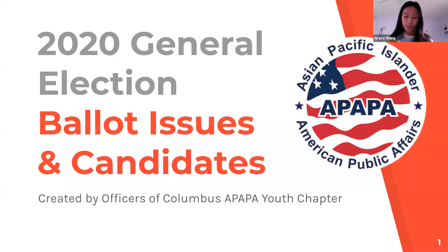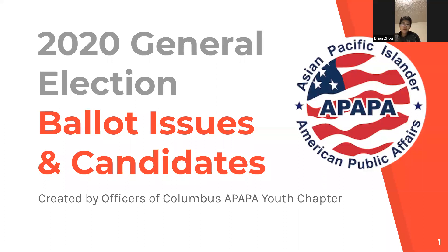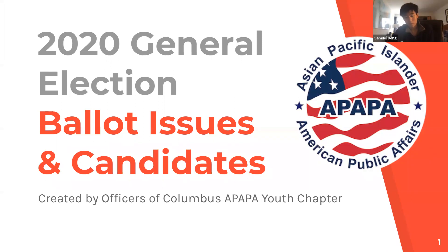General Election Ballot Issues and Candidates for Delaware and Franklin County. This is created by Columbus AAPA Youth Chapter. My name is Grace Wong and I am President. My name is Arwen Zong and I'm the Secretary. My name is Brian Zao and I'm the Treasurer. My name is Abhi Boda and I am VP of Communications. My name is Eamon Hurley and I'm the VP of Development. My name is Sam Deng and I'm VP of Operations.